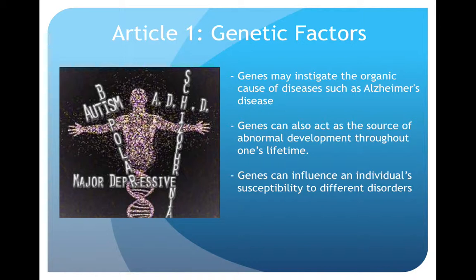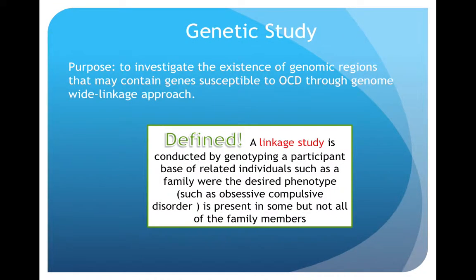Research into the connection between genes and etiology has shown that genes often influence mental disorders in three different ways. First, they might instigate the organic cause of disease, as in Alzheimer's. Secondly, they can act as a source of abnormal development throughout one's lifetime. And thirdly, they can influence individuals' susceptibility to different disorders. It is in light of these genetic factors that research into gene-based etiological factors is conducted.